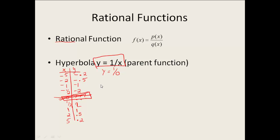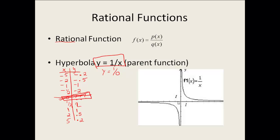When I go to plot those points, I'm going to end up getting a graph that looks like this. Now let's go back to x equals 0, that value we can't have. Notice what's happening on the negative side of my graph — as I get closer to 0, my graph is coming downward.